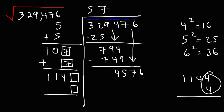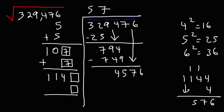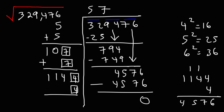1144 times 4: 4 times 4 is 16, carry 1; 4 times 4 is 16 again, plus 1, that's 17, carry 1; 1 times 4 is 4, plus 1 is 5; 4 times 1 is 4. So we get 4576. 1144 times 4 equals 4576, and we have a remainder of 0. We take our last digit and put it in the answer. The square root of 329,476 is 574. So now you know how to find the square root of a large number using the division method.